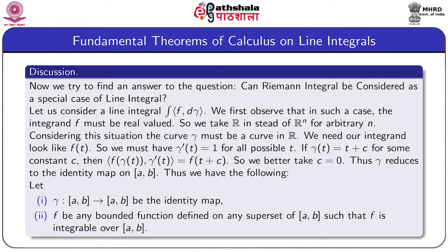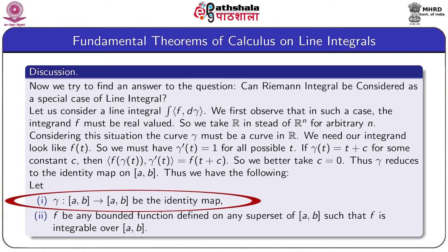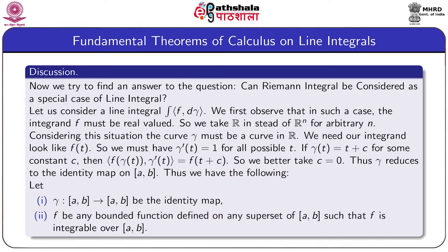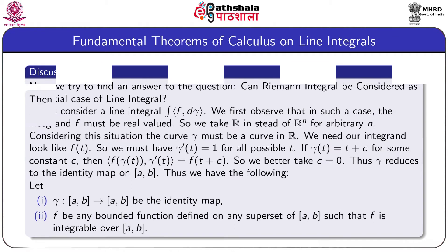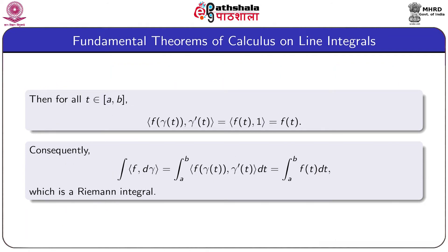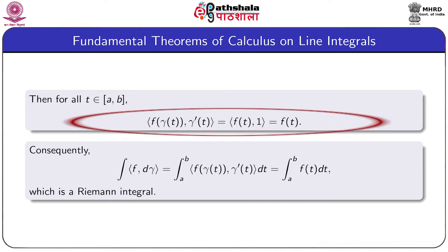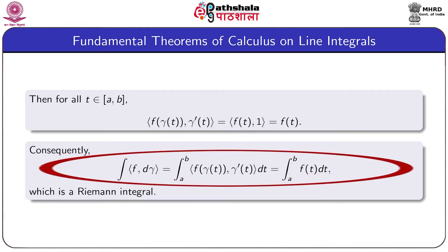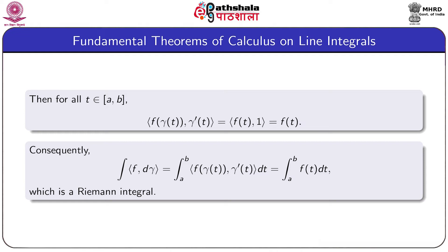Thus we have the following. Let gamma from the bounded closed interval [a, b] to itself be the identity map, and let f be any bounded function defined on any superset of [a, b] such that f is integrable over [a, b]. Then for every t in [a, b], the inner product of F(gamma(t)) and gamma-dash(t) equals the inner product of F(t) and 1, which is simply F(t). Consequently, the line integral of F d-gamma equals the integral from a to b of F(t) dt.